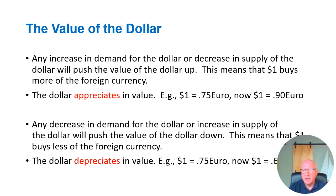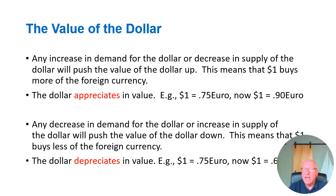The exact same thing would be the opposite. If anything reduces the demand for the dollar or increases the supply of the dollar, it will push the value of the dollar down, meaning one US dollar buys less of the foreign currency. So let's take a look at a depreciation. It used to be that one dollar bought 0.75 euros; now one dollar only buys 0.60 euros. This means the dollar depreciated — even though the number in front of the word euro went down, that doesn't mean the euro fell in value. It means that one dollar doesn't buy as many euros now as it did before, so the dollar itself must be the one depreciating.